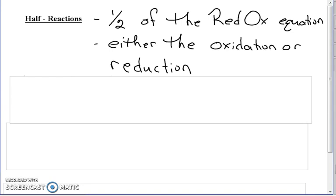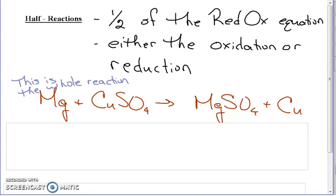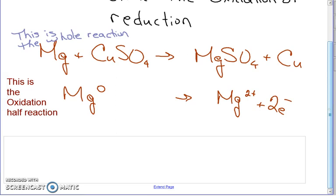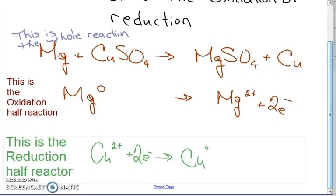So if we have this kind of situation — the whole reaction is Mg plus CuSO₄ — it's a single replacement reaction, that is the whole reaction. Half reactions are the two parts of it: the oxidation and the reduction. The oxidation half is magnesium going from zero to a plus two by losing electrons. The reduction half reaction is copper going from a plus two to a zero.